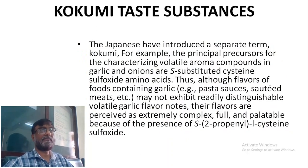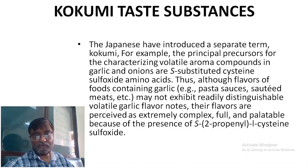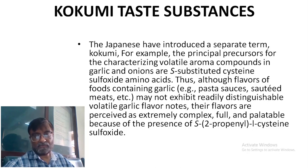Another taste sensation associated with food is called kokumi taste. This term originated from Japan. This is the principal precursor for the characterization of volatile aroma compounds in garlic and onions, and we will look at how these flavor substances are developed in the next lecture. These are sulfur-substituted cysteine derivatives — cysteine is a sulfur-containing amino acid.